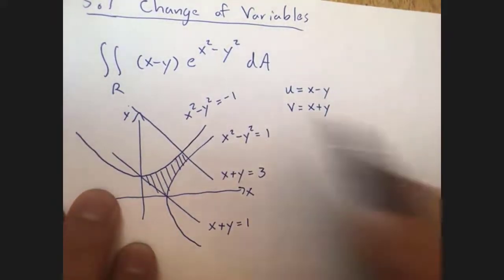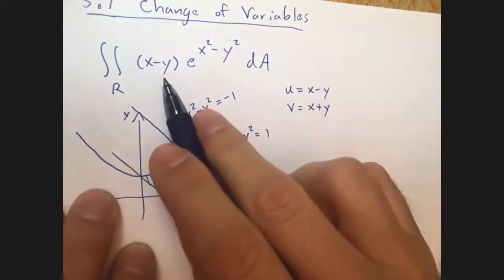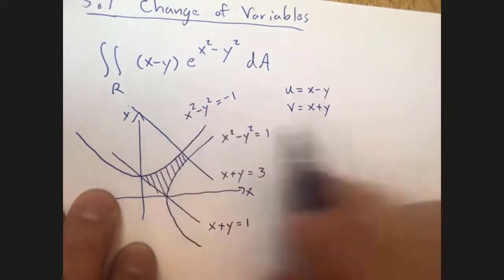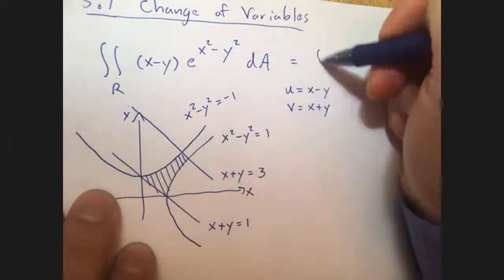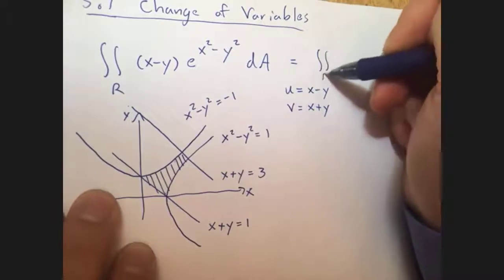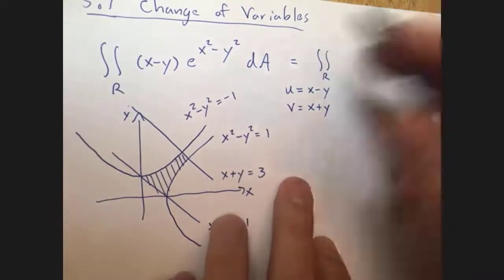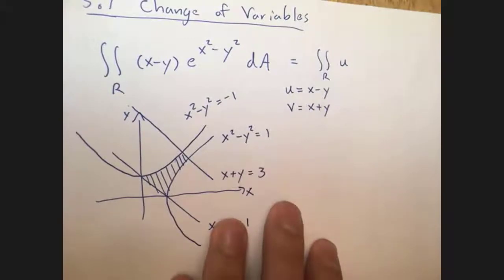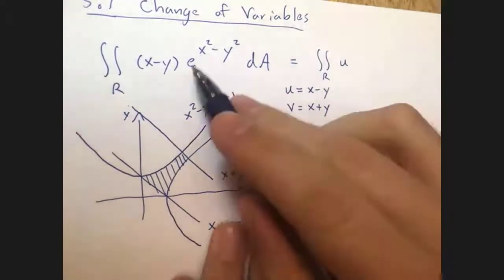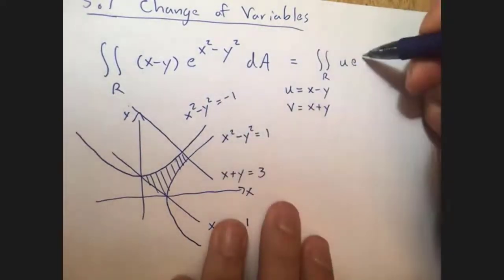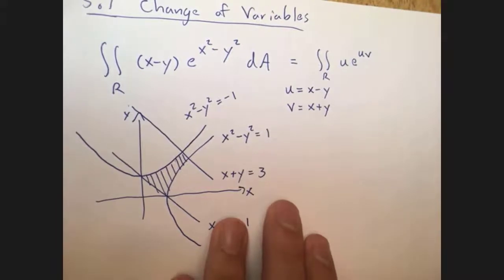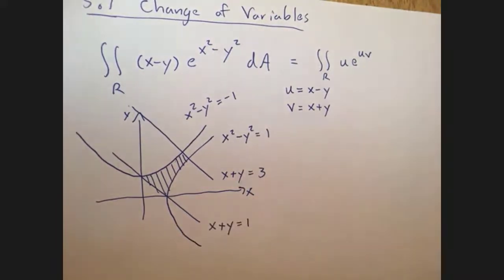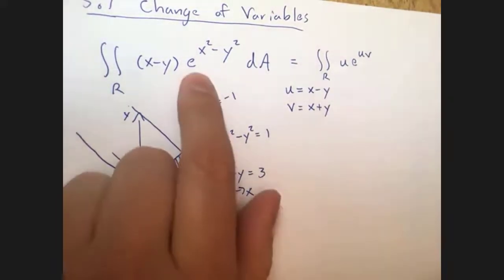In these new coordinates, the integral becomes much nicer. x minus y just becomes u, and e to the x squared minus y squared becomes e to the uv, since x squared minus y squared equals u times v. So that change of coordinates makes things pretty nice as far as the integrand goes.